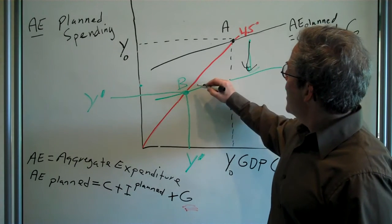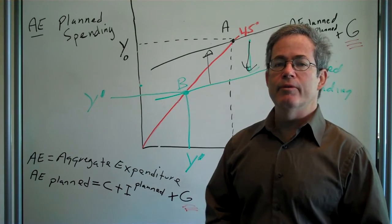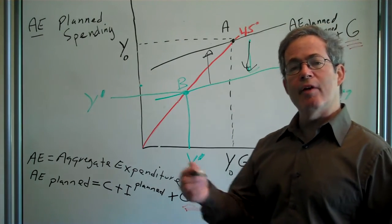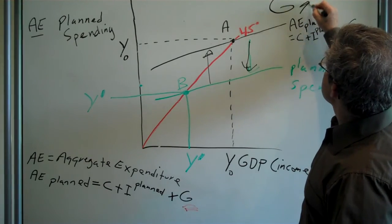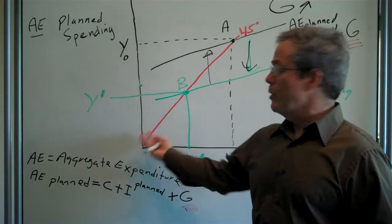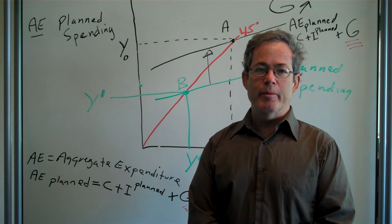And we can represent that by a movement up in the planned spending curve. And what will happen is if the government spends more money, then the economy will expand. And that's fiscal policy to generate more employment.